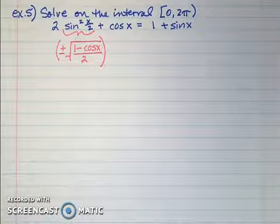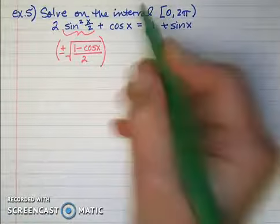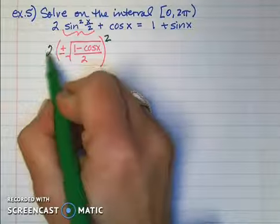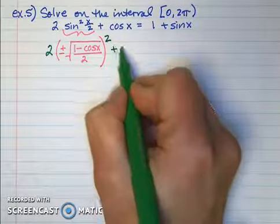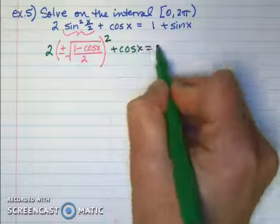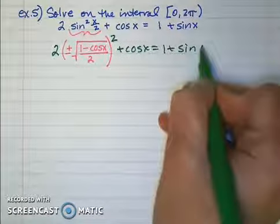Now I'm going to square that, because we have sine squared. I have a 2 out front. When I square the square root,